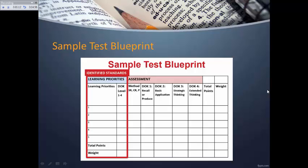The blueprint also has a method column showing SR, CR, or P. SR is selected response—multiple choice or true/false. CR is constructed response, where the student provides an essay or open-ended answer. P is performance, such as completing a computer program and submitting an executable file. You then total the points allocated to different learning priorities and domains, and assign higher point values to items you want to weight more heavily.